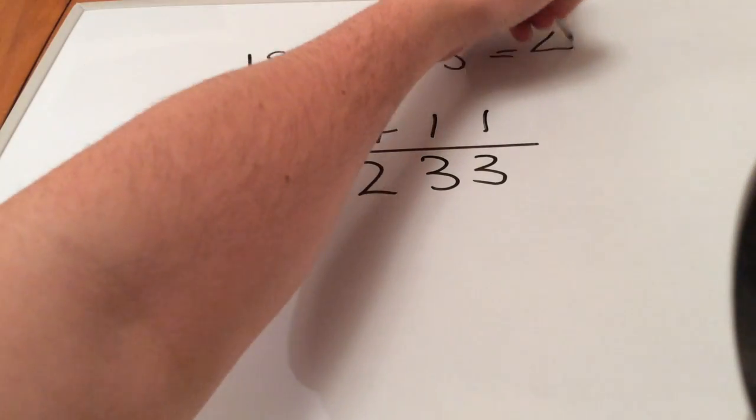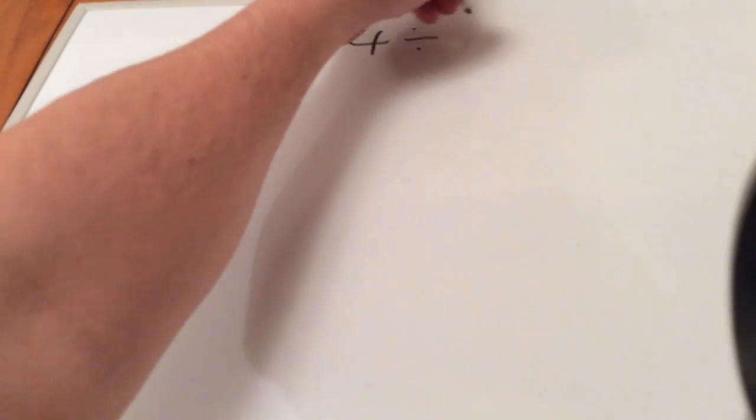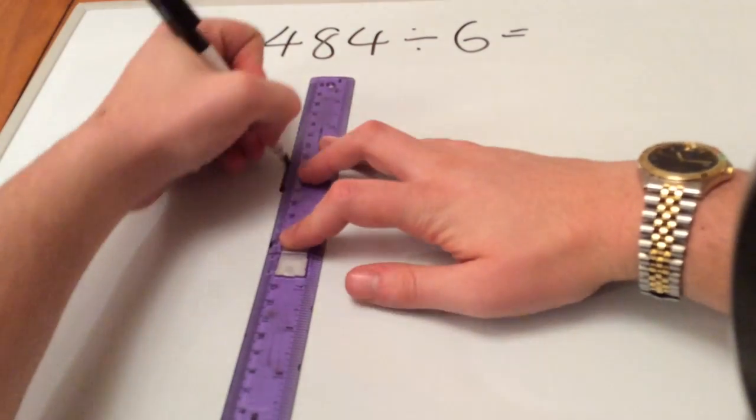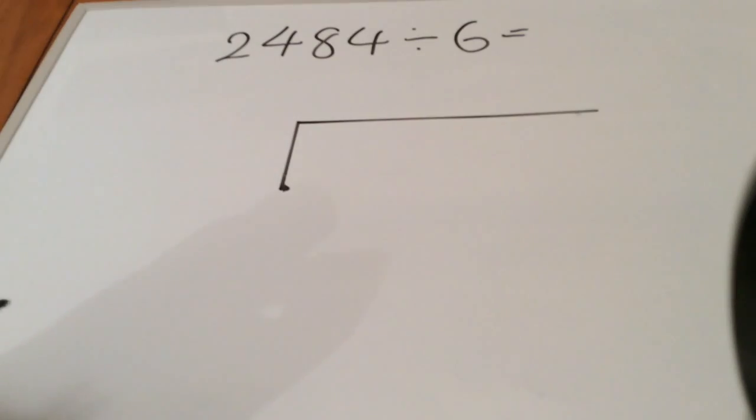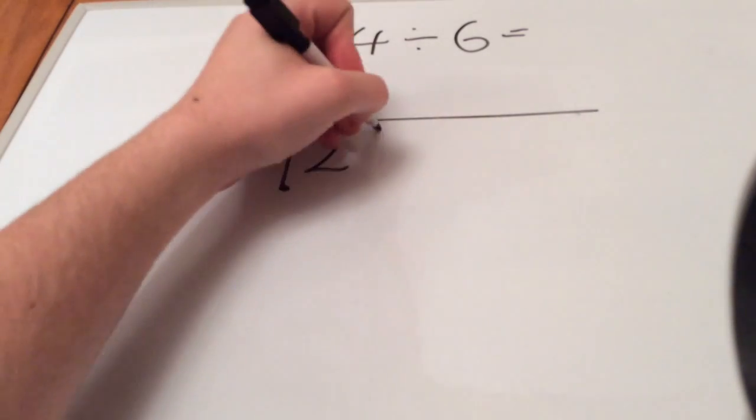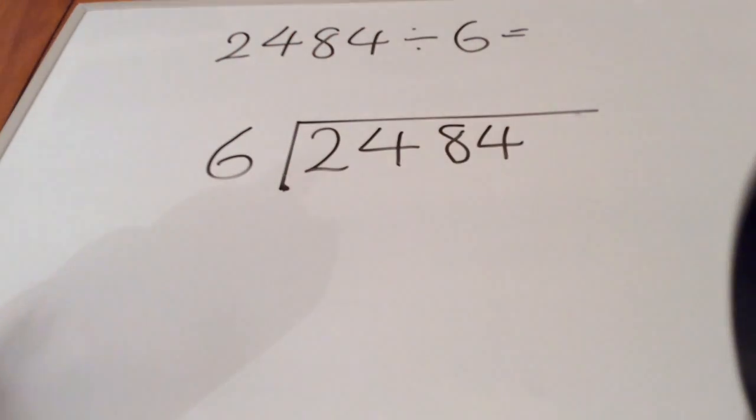Let's have a look at another example: 2484 divided by 6. We need to be particularly good with our 6 times table to be able to carry this out. We draw the bus stop again. The number we are dividing by goes here and the other number inside the bus stop.